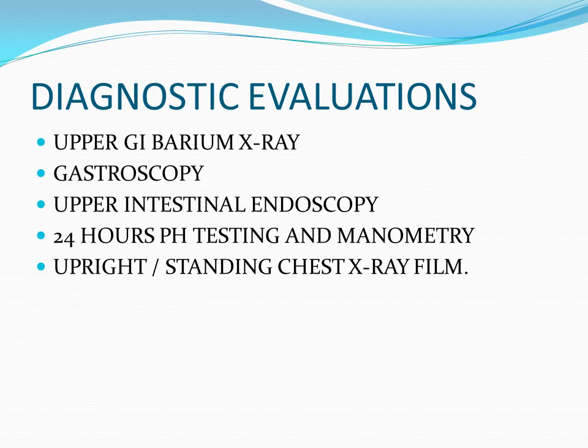What are the diagnostic evaluations? The first one is upper GI barium X-ray, done with the help of barium. Then gastroscopy, which is endoscopy done to see the stomach. Then upper intestinal endoscopy. Also, 24-hour pH testing for acid balancing, manometry, and chest X-ray taken in the upright or standing position.